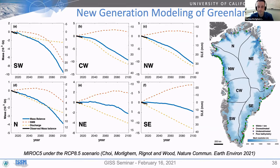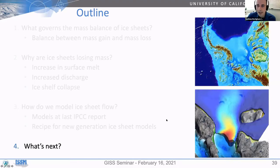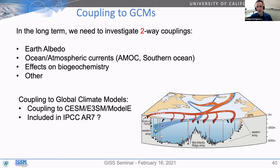Looking at next steps: the first is coupling to global climate models — really a two-way coupling. So far we've mostly looked at ice sheets as standalone, but over longer timescales, the albedo of the Earth will change as ice sheets retreat, ocean and atmospheric currents may be affected by freshwater discharge from ice sheets, and there may be biogeochemical effects. Many efforts are underway — CISM, E3SM, ModelE are all trying to get dynamic ice models included. With ISSM, we've been coupling to the MIT GCM and CESM. Hopefully this will be included in the next IPCC report.